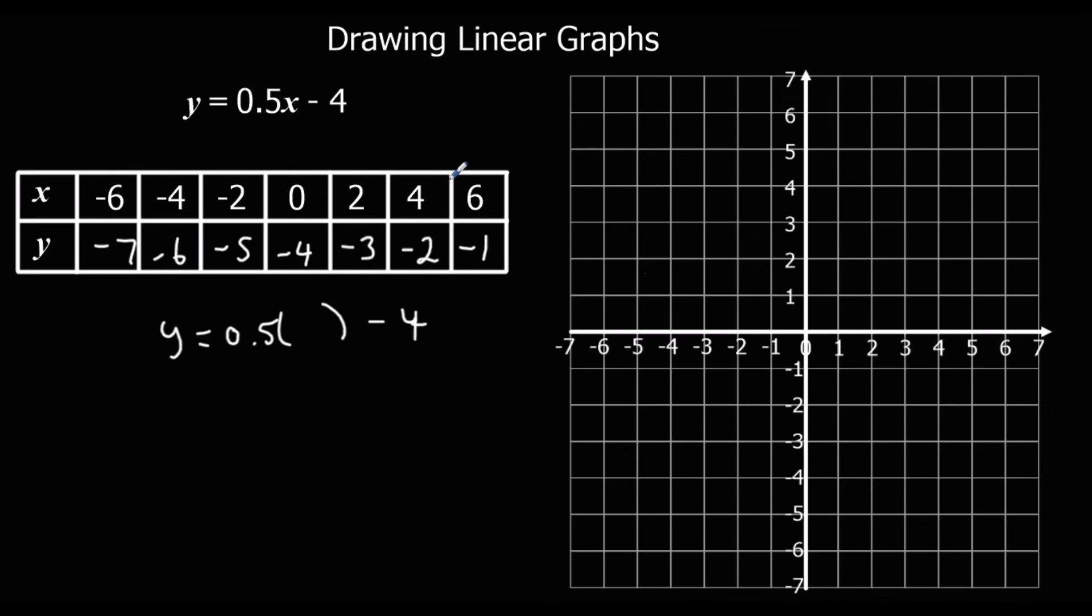So let's draw these coordinates on now. So this becomes 6 minus 1. This becomes 4 minus 2. Let's plot these on the graph. So 6 minus 1. 4 minus 2. 2 minus 3. 0 minus 4.